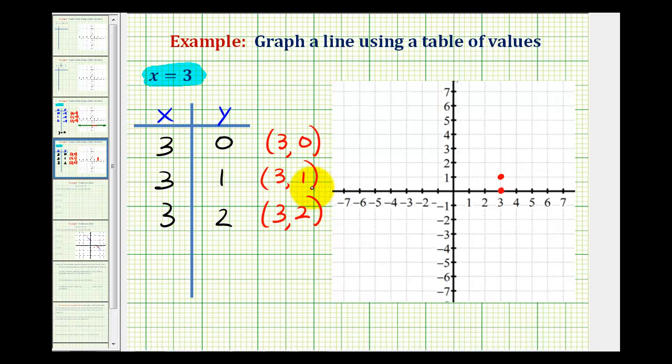And for the point three, two, we'd move right three units and up two units to this point here. So now we can quickly see that x equals three is a vertical line, and in this case, it passes through these three points.